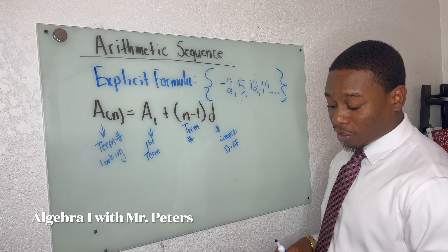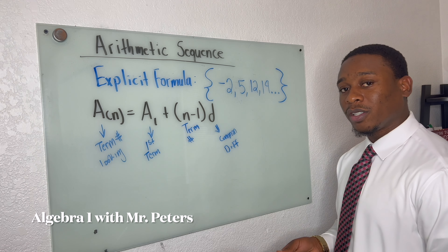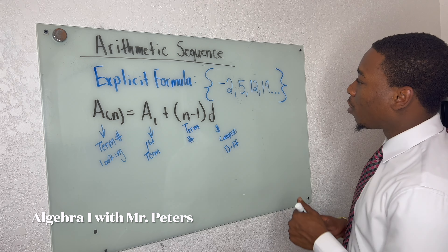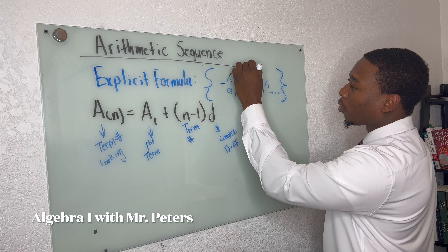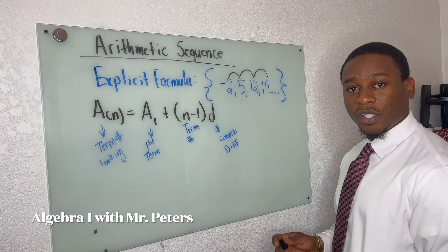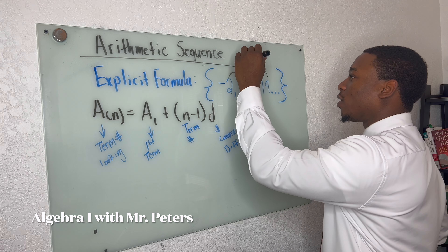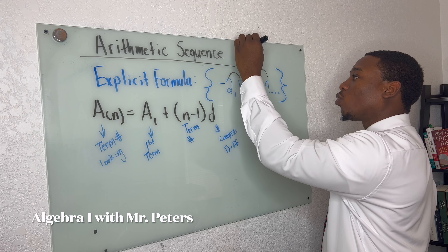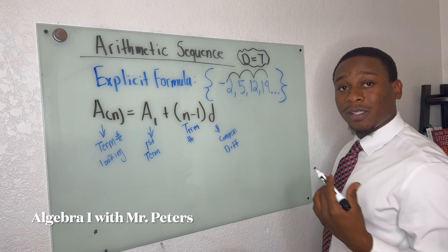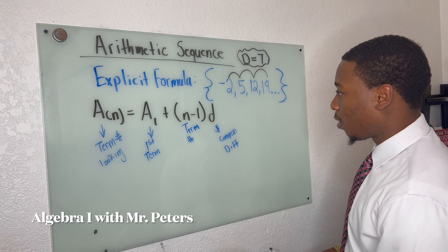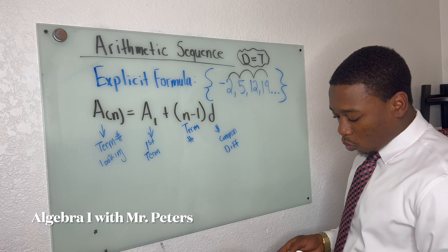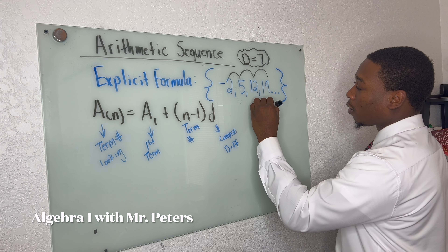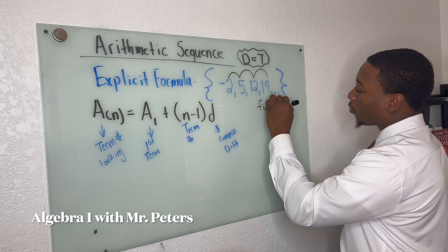Now that we know all that information, let's check to determine if this is actually a sequence. When we look at each of these numbers and compare the difference, we know that the common difference is going to be seven all across. So this would be considered a sequence. And what they want us to do is to find the 34th term.